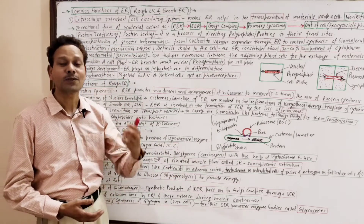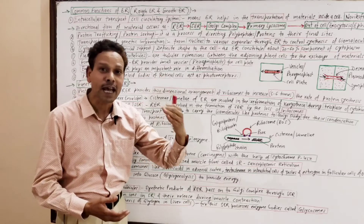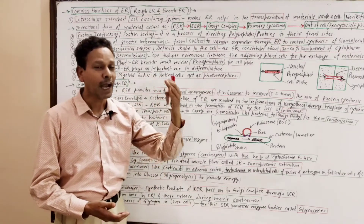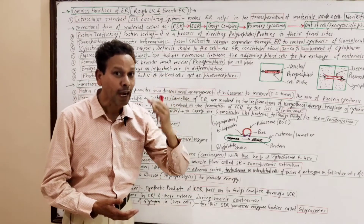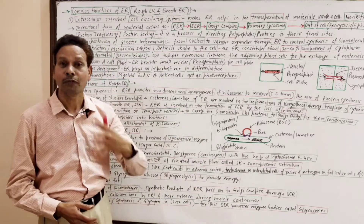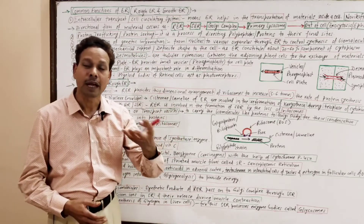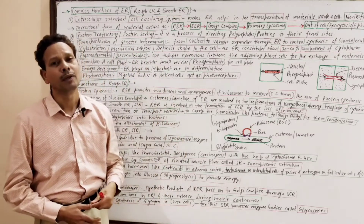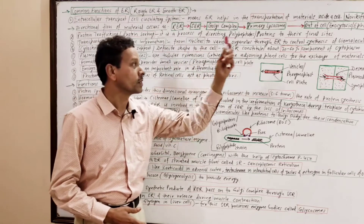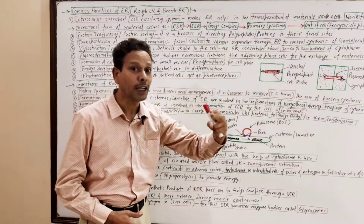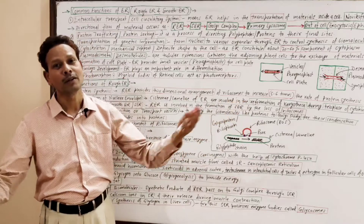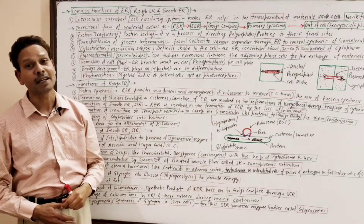Cytoskeleton: the endoplasmic reticulum provides a framework and definite shape to the cells, as it constitutes about 30 to 60 percent of a cell's components.